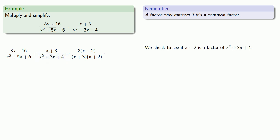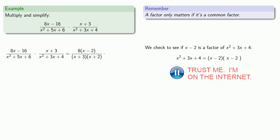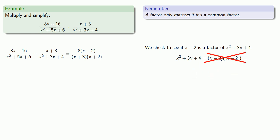Can we write x squared plus 3x plus 4 as x minus 2 times something? The something would need an x and a constant of minus 2. We check, and it turns out x squared plus 3x plus 4 is not equal to x minus 2 times x minus 2. Since x minus 2 is not a factor, it doesn't matter whether x squared plus 3x plus 4 factors further — we just leave it as is and rewrite it in our problem.